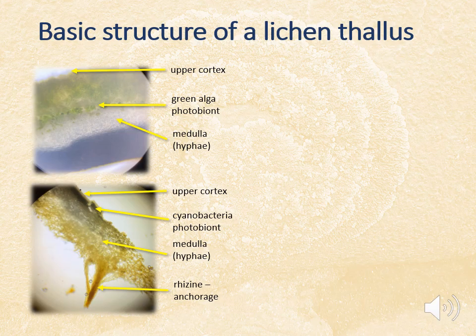It is helpful to visualise the structure of the thallus when looking at different lichen species. Typically the thallus has a number of layers: an outer protective cortex, then a layer of photobiont. The upper surface shows a layer of green alga or cyanobacteria photobiont, mostly restricted to the upper surface because the cells require access to light to photosynthesise. The main thickness of the thallus is the medulla, made up of hyphae — the fungal hyphae also envelop the cells of the photobiont. You can also see an example of a rhizine in the lower photograph.